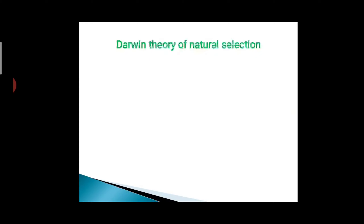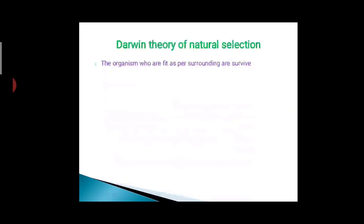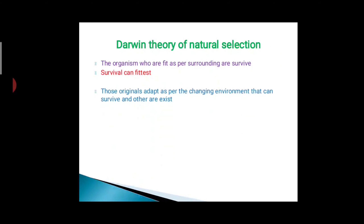Today we are going to discuss Darwin's Theory of Natural Selection. The organisms who are fit as per their surroundings are the ones that survive. Darwin proposed the theory that survival can be tested. Those organisms that adapt as per the changing environment can survive, and others perish.